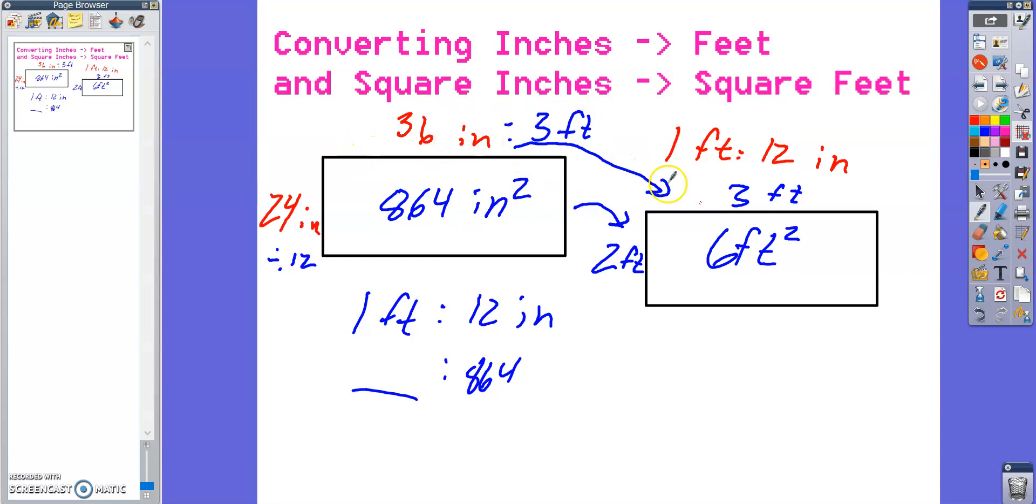To get from length to length, 36 to 3, yeah, that's a simple divide by 12 situation. Same thing on the other side. But for the area, here's how it works.